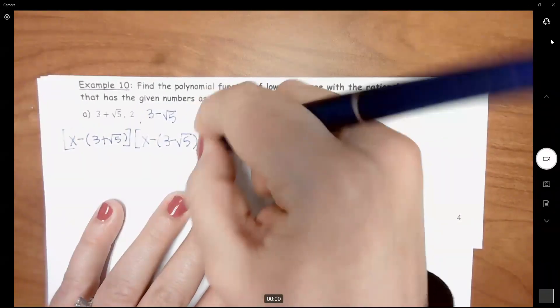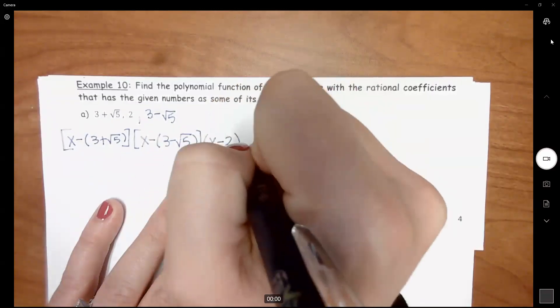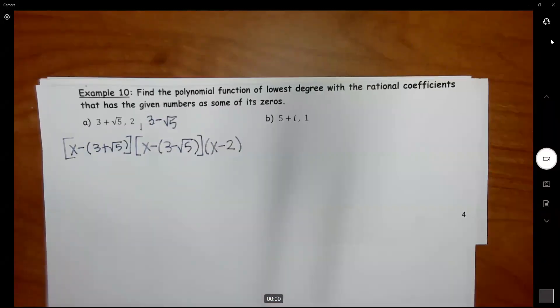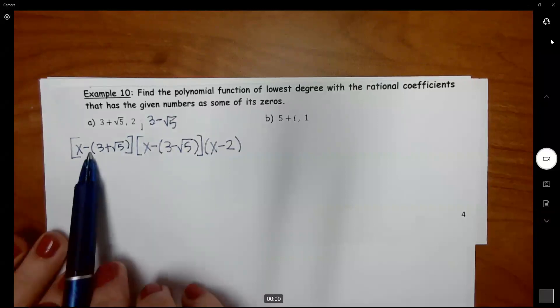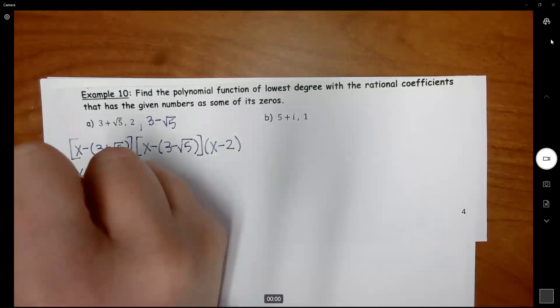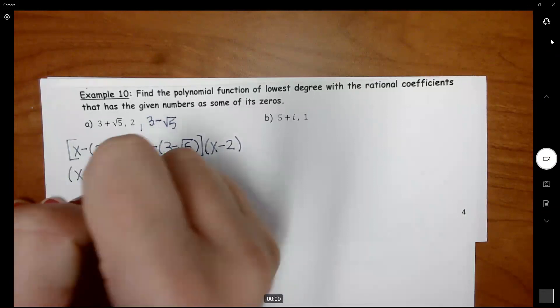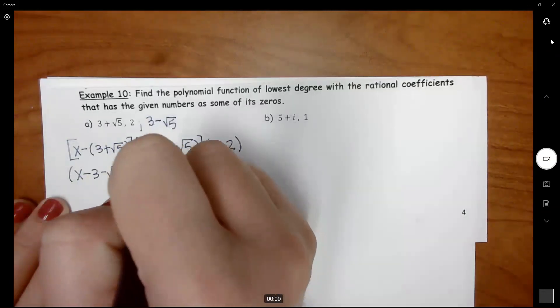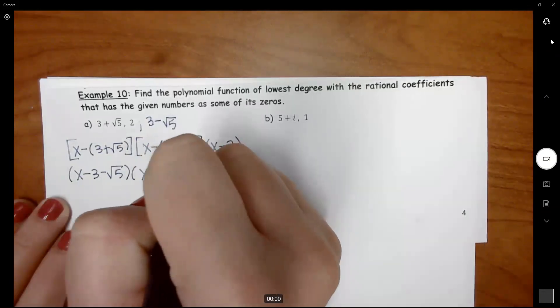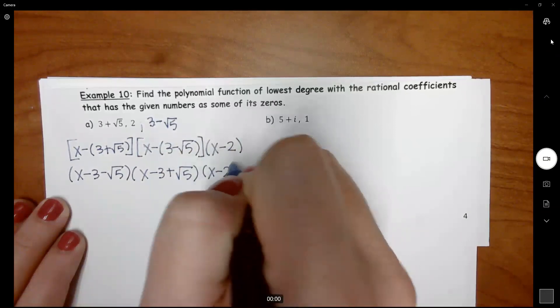We don't need brackets there. Let's simplify these here. Let's distribute the negative. So this one becomes X minus 3 minus square root 5 and X minus 3 plus the square root of 5. And we'll bring down that X minus 2.